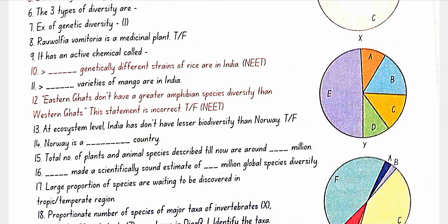The total number of plant and animal species described so far is around 1.5 million. Robert May made a scientifically sound estimate of 7 million global species diversity. A large proportion of species are waiting to be discovered in the tropical region.